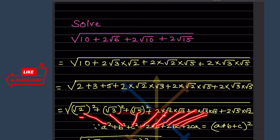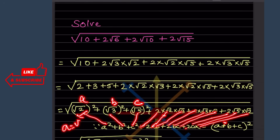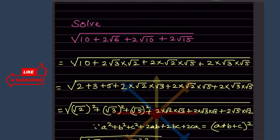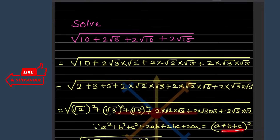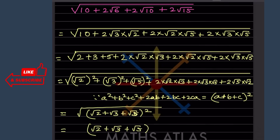So a is √2, b is √3, c is √5. This is a, this is b, and this is c. So √5 here, then 2 as it is, √5, and a is √2. We are going to use the formula (a + b + c)², so a is √2, b is √3, c is √5.